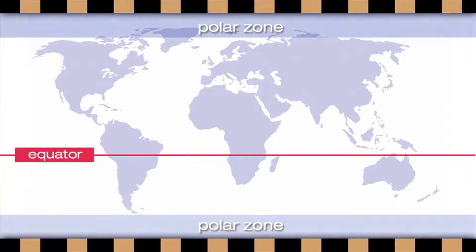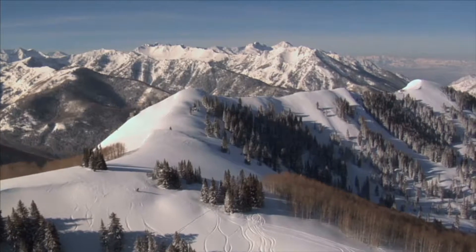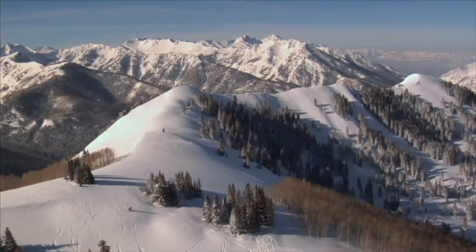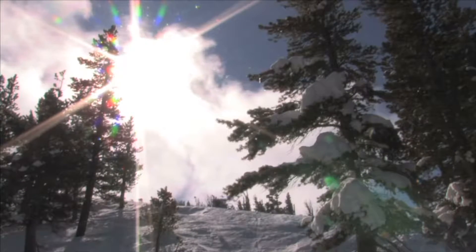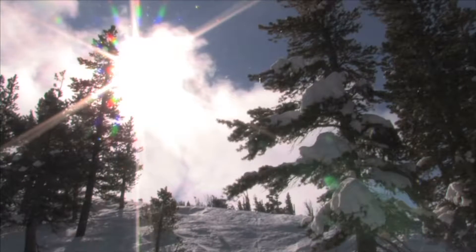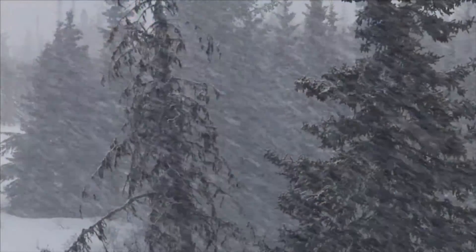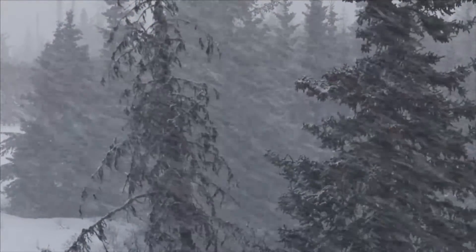The polar climate is found at the extreme north and south of the Earth, also known as the polar zones. Polar zones have a cold climate with long winters. Because of their location, polar zones receive no direct sunlight. Polar climates are very, very cold, windy, and snowy.